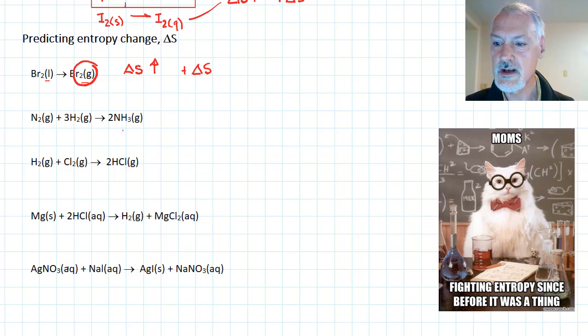Now in this situation, I have all gases. However, I'm going from four gas to two gas. Four gases would have a wider distribution of entropy. So I'm going to say here that the entropy is decreasing in this reaction, or a negative change in entropy.